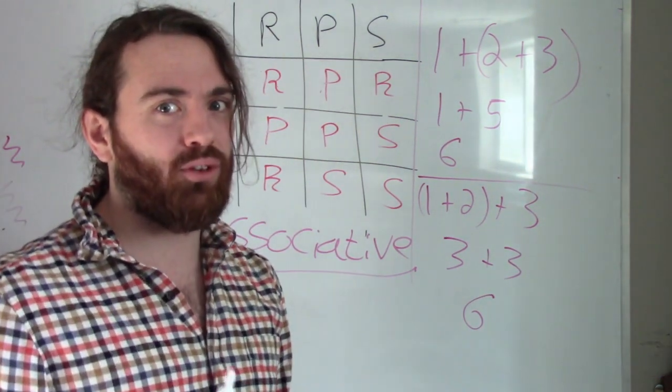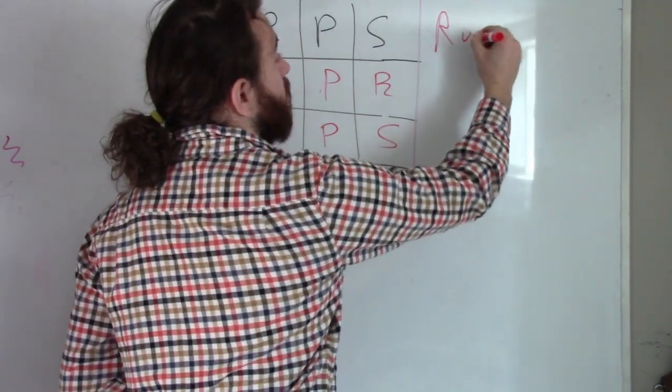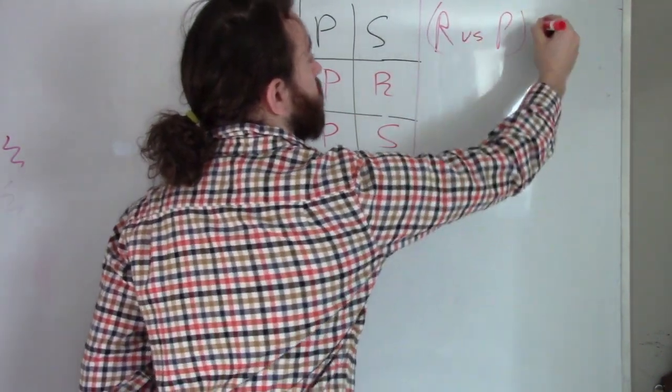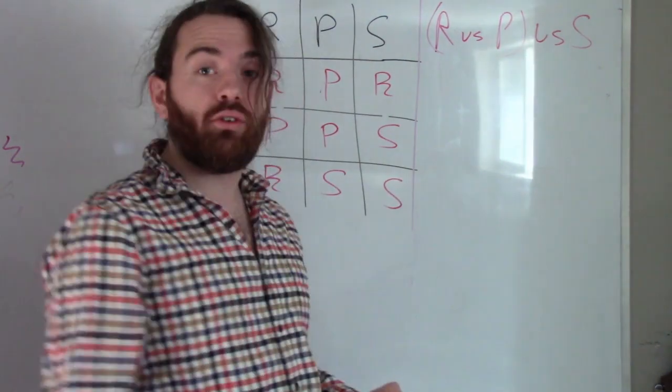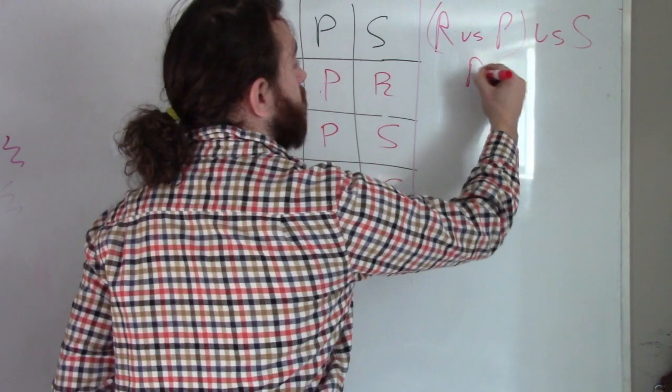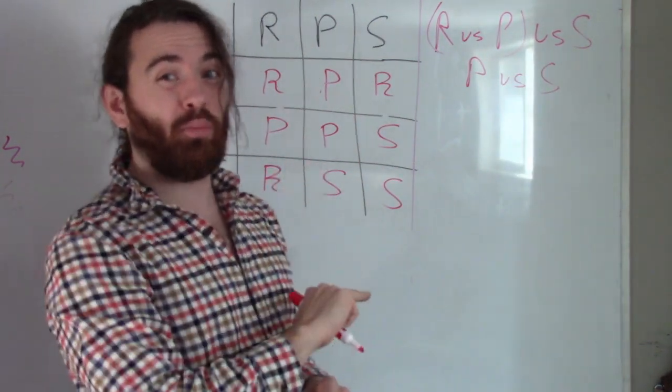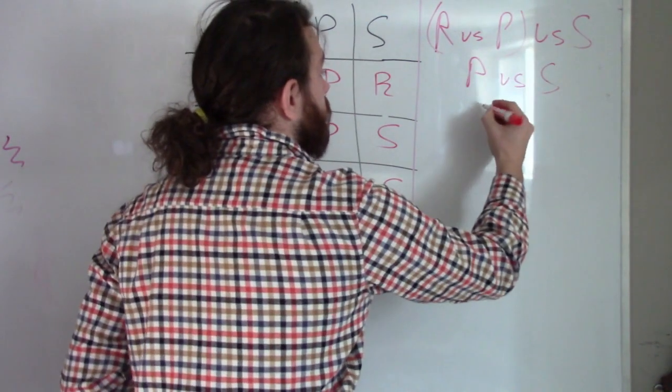Let's take a look at what happens for rock, paper, scissors. Suppose that we're to have rock versus paper in parentheses and then versus scissors. Well, rock versus paper, we know from our table that paper covers rock. So paper wins and I'm left with paper versus scissors, but then scissors cuts paper. So scissors wins.